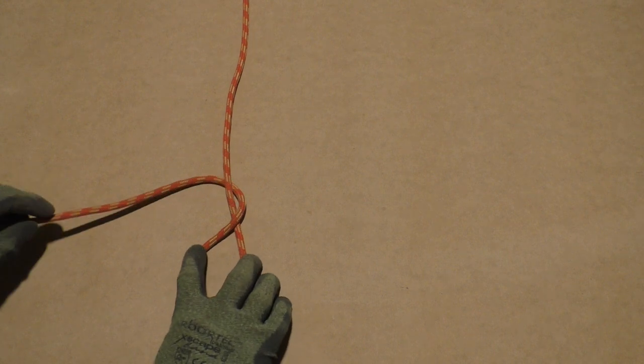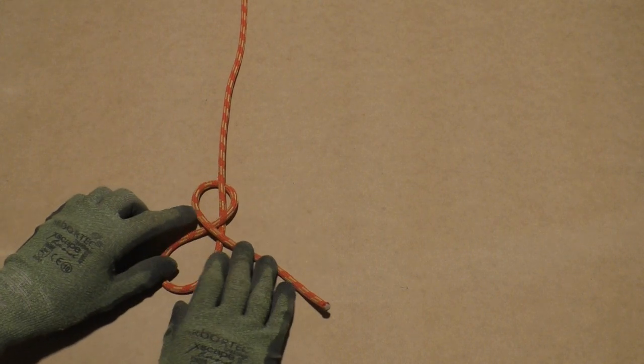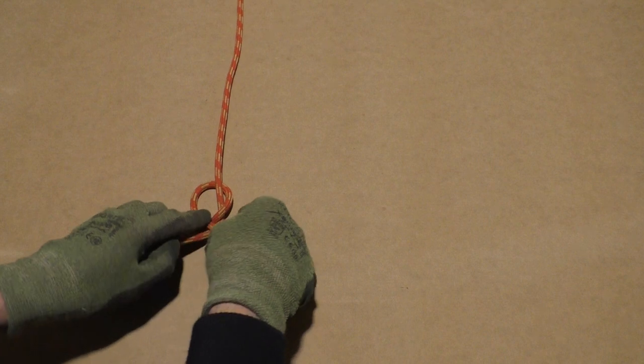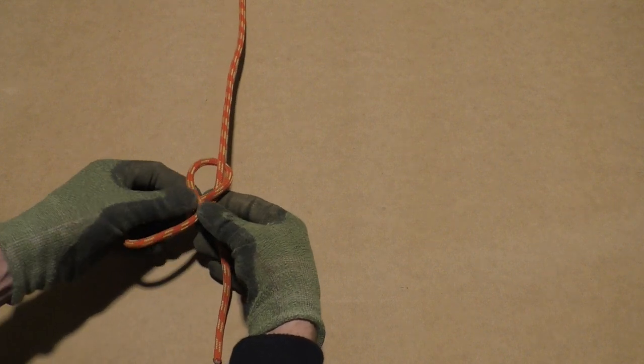We continue by bringing the working end over the standing part again. You must make sure that there's enough working end left to complete the knot. It's recommended that there are at least 3 inches of tail sticking out.